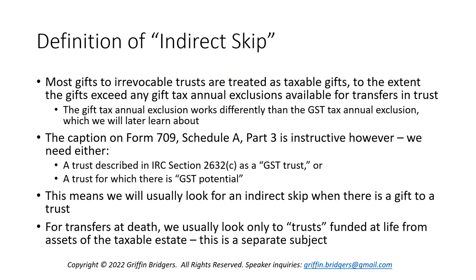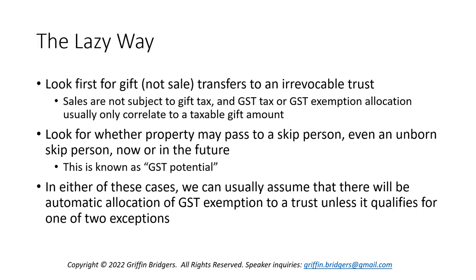What this means is we're going to look to an indirect skip where there's a gift to a trust and not a transfer at death. In a case of a transfer at death, we usually only look to trusts funded from the assets of the taxable estate. The lazy way to identify an indirect skip is first to look to see if there is a gift — not a sale — to an irrevocable trust. When it comes to GST exemption allocation, all we're going to be concerned with is a gift transfer to an irrevocable trust.